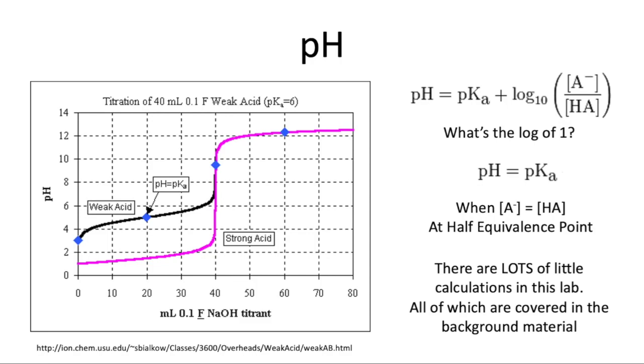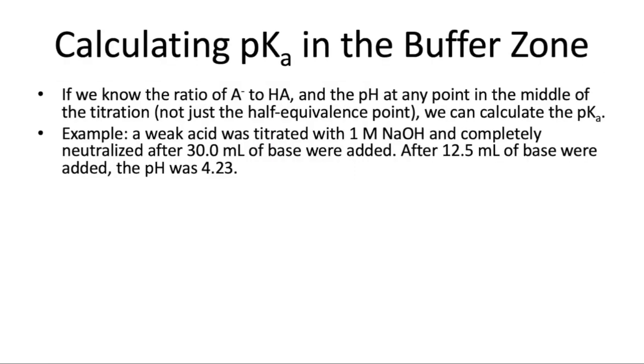In this lab, because you don't have a pH meter, the data that you have is for just some point somewhere in the middle of the titration, where some base has been added, and not all of the acid is neutralized, so you're in the buffer zone. So we're going to treat it a little bit differently. Essentially, if we know the ratio of our conjugate base to our acid, and we know the pH at any point in the middle of the titration, so not just the special half-equivalence point when pH equals pKa, but anywhere in that buffer zone, then we can calculate the pKa. We just use the same equation, the Henderson-Hasselbalch equation.